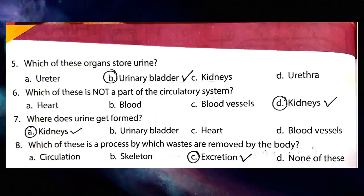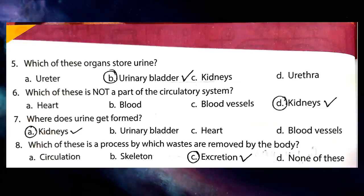Fifth — which of these organs store urine? Correct answer is B — urinary bladder. Urinary bladder is a hollow muscular organ that stores urine. Sixth — which is not a part of the circulatory system? Correct answer is D — kidneys; kidneys are part of the excretory system. Seventh — where does urine get formed? A — kidneys. Eighth — which process removes waste from body? C — excretion (E-X-C-R-E-T-I-O-N).